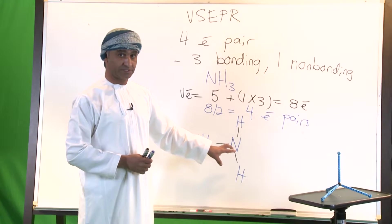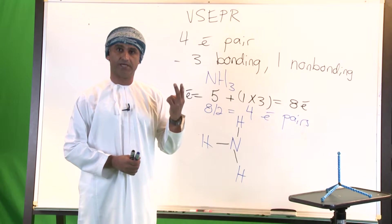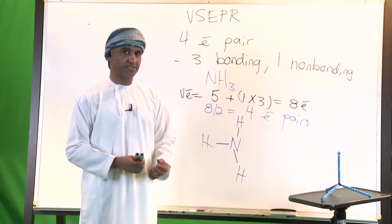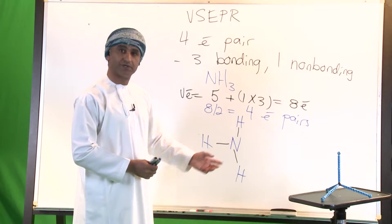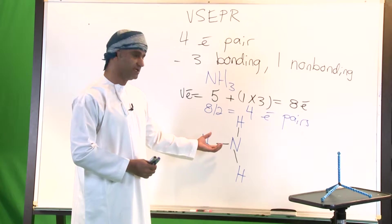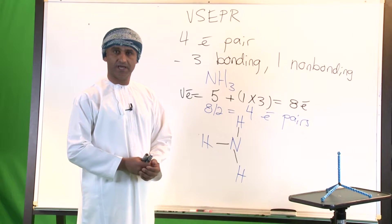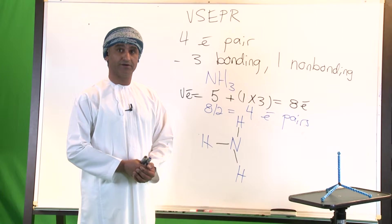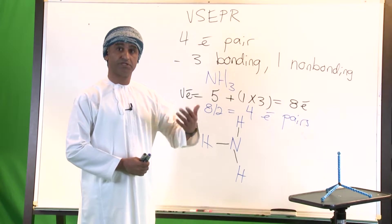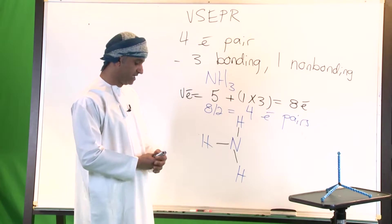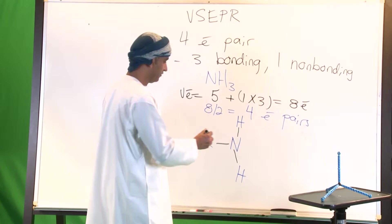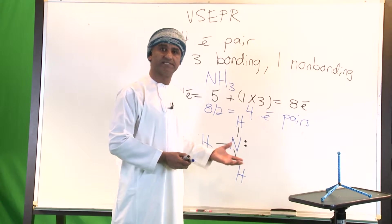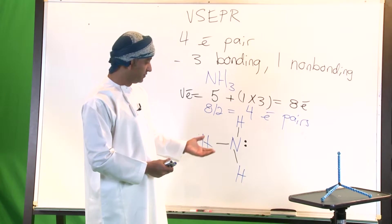Each hydrogen atom obeys the duet rule, surrounded by two electrons. However, the central nitrogen atom is only surrounded by six electrons, which is not satisfactory — nitrogen is in period two and should obey the octet rule, requiring eight electrons. The additional pair should be in the form of a lone pair, giving nitrogen eight electrons total.